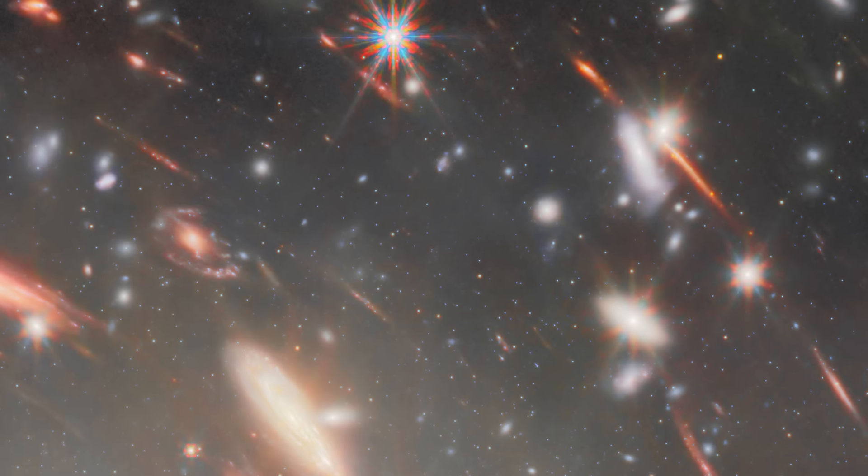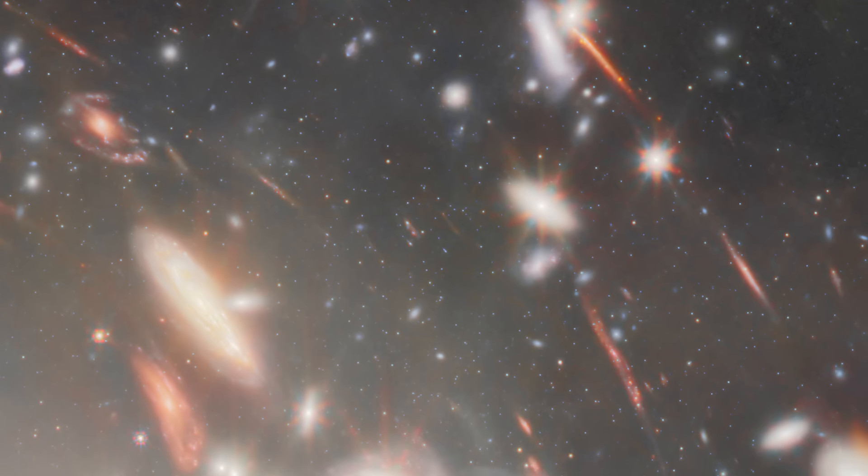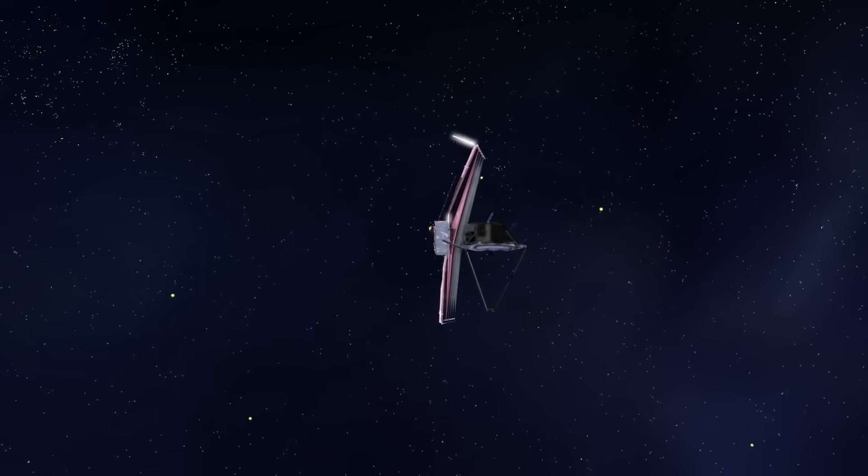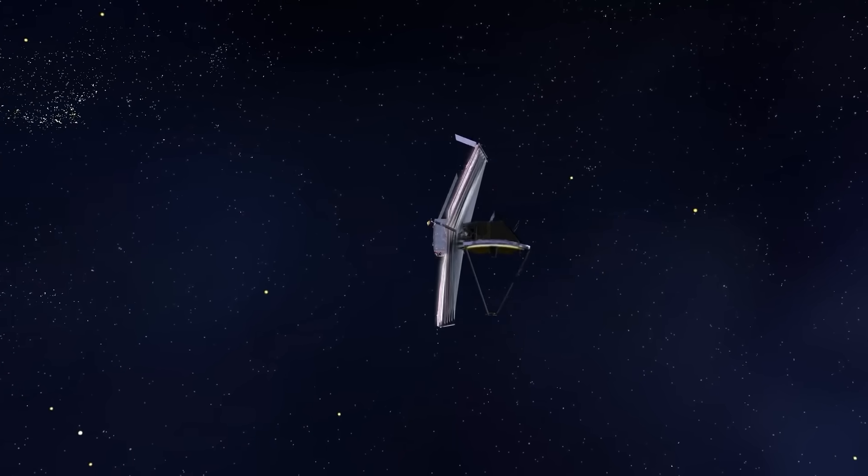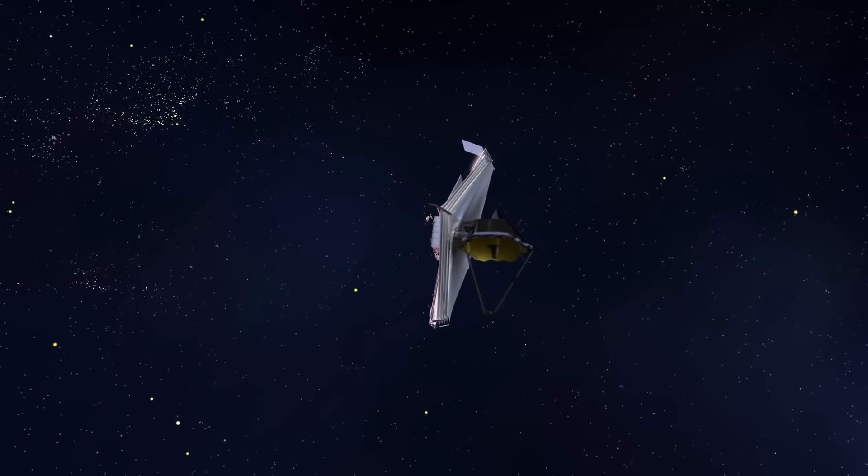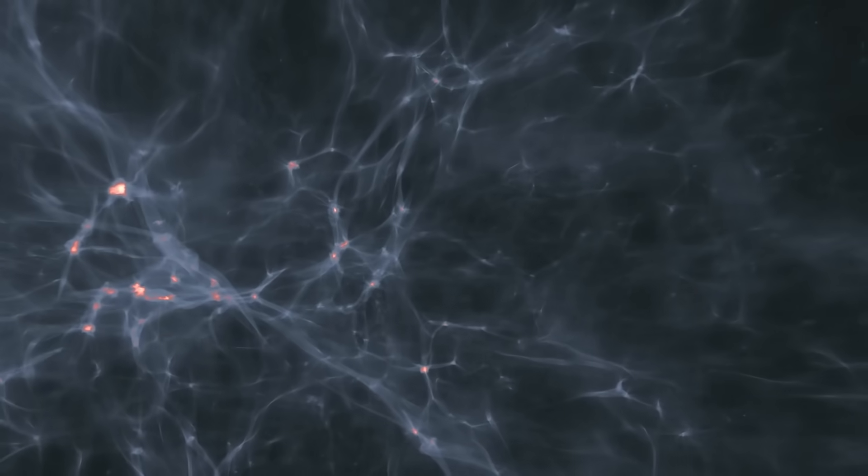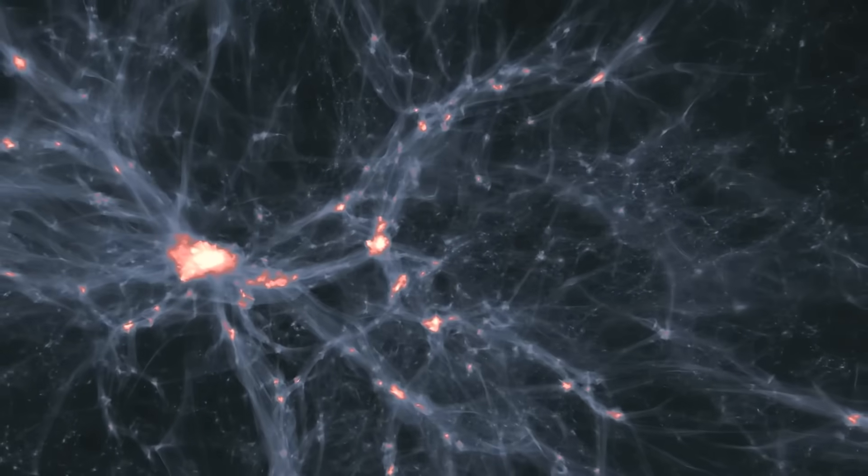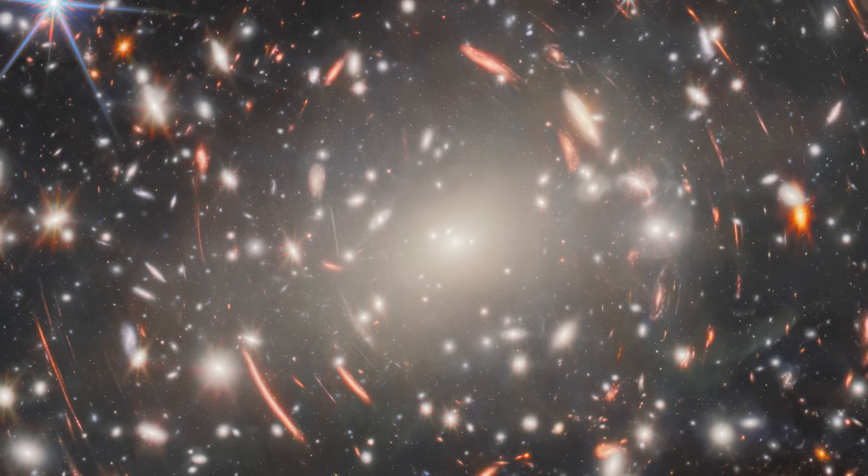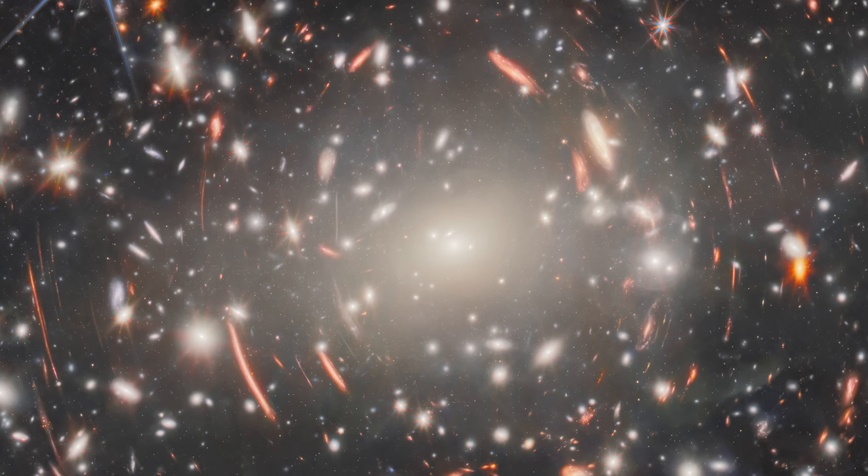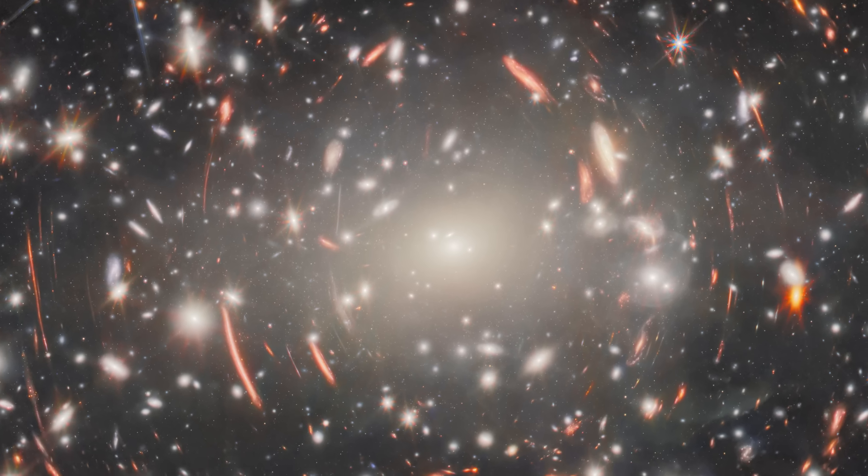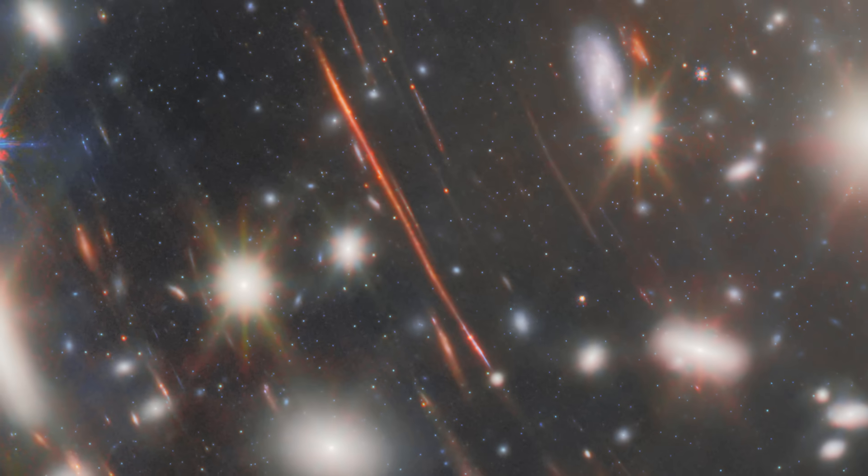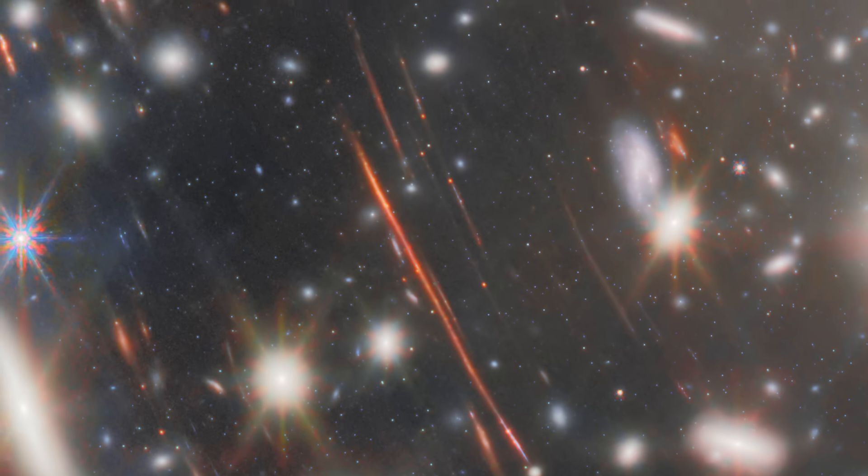This deep observation of Abell S1063 is part of a larger effort known as the Glimpse Program, an ambitious initiative using the James Webb Space Telescope to study one of the most important chapters in cosmic history, the Cosmic Dawn. This is the era just a few million years after the Big Bang when the very first galaxies and stars began to form. By focusing Webb's powerful infrared eyes on this single region for 120 hours, the Glimpse Survey has pushed the boundaries of how far back we can see. In this deep field, astronomers have identified galaxies at extreme redshifts, possibly even beyond 15.